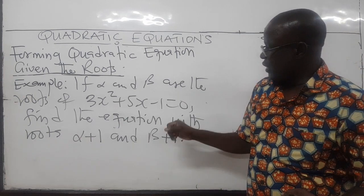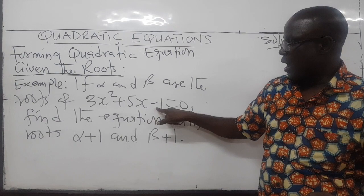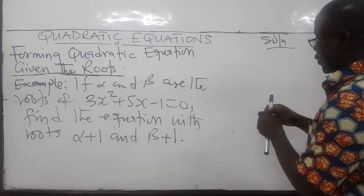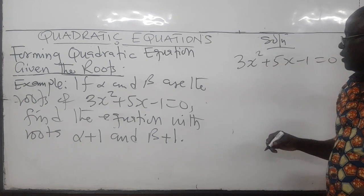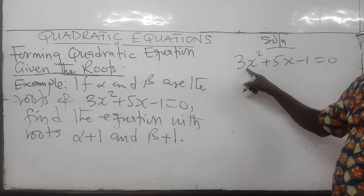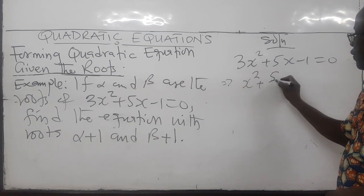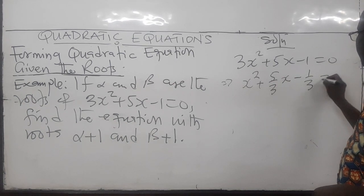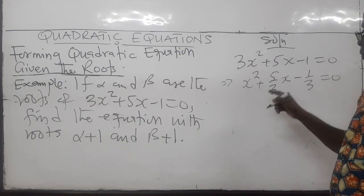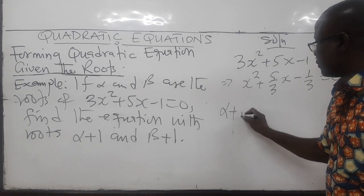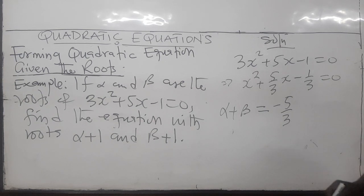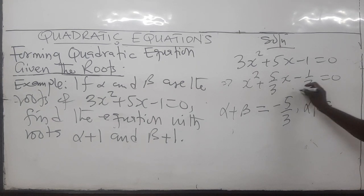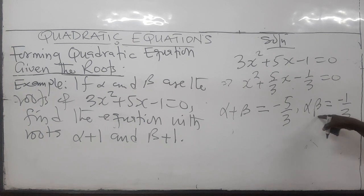Before we can do that, we need to use the information here to find alpha plus beta and alpha times beta. Given 3x squared plus 5x minus 1 equals zero, divide through by 3 to get x squared plus five-thirds x minus one-third equals zero. From here, alpha plus beta — the sum of the roots — is negative five-thirds, and the product of the roots, alpha beta, is negative one-third.